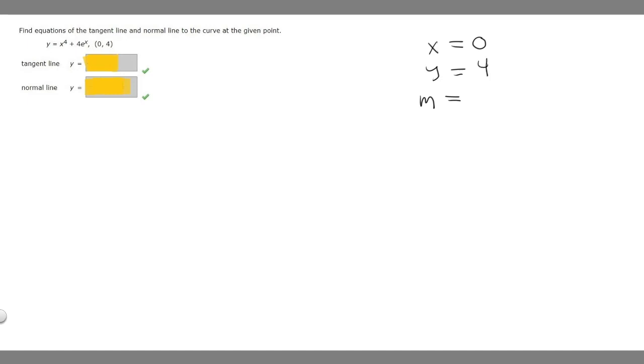But how do we do that? What we want to do is take the derivative of our function, and then plug in our x value, which is 0. So we have the function y equals x to the 4th plus 4e to the x, and we want to find the derivative, which is y prime.